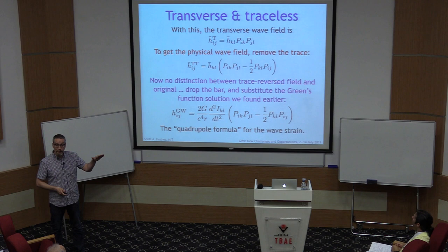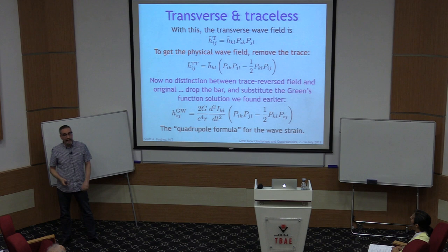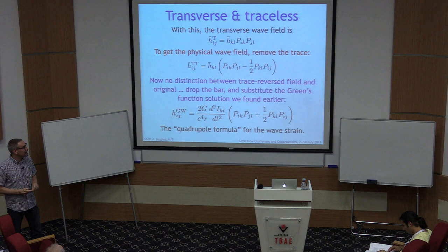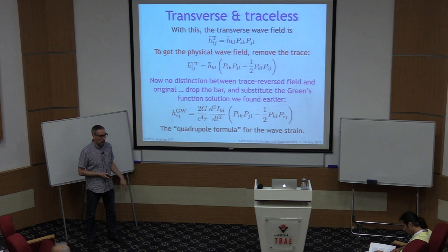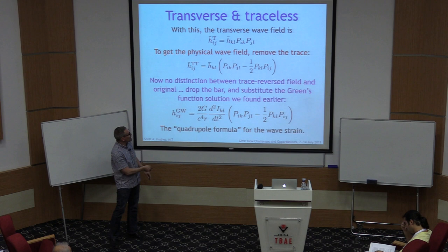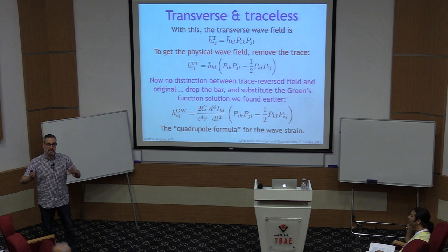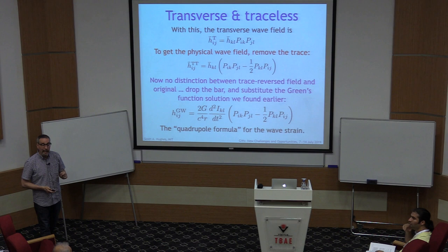At this point there's no real distinction between the trace-reverse field and the original, so I'll drop the overbar. This is the field that characterizes at leading order the gravitational radiation from a given source. When you look up the quadrupole formula in a general relativity textbook, this is what is meant — at least if the book is being rigorous. You need to include these projection tensors describing variation with propagation direction to fully understand the radiative degrees of freedom.